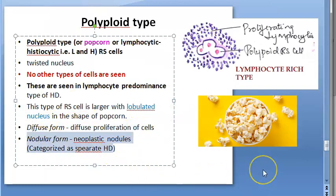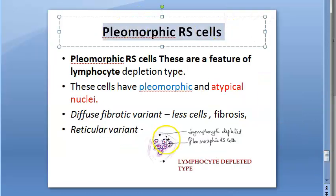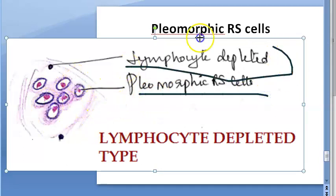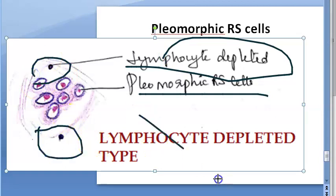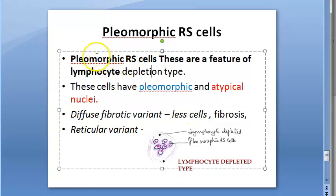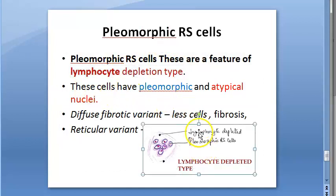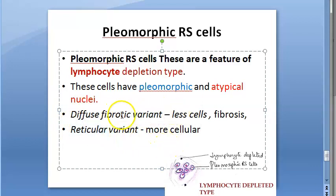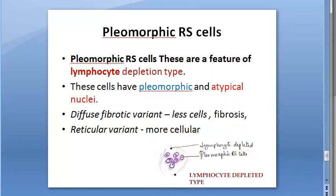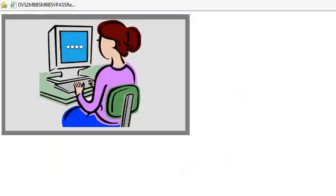In lymphocyte depletion type of Hodgkin disease, pleomorphic Reed-Sternberg cells are seen — different forms of RS cells present together. Very few lymphocytes are visible — lymphocytes are depleted. This type has the worst prognosis in Hodgkin disease. There are two variants: diffuse variant (fewer cells) and reticular variant (more cellular).